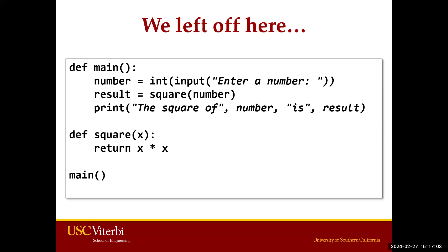The user enters a number and we convert it to an integer with the int function. Then we call the square function and use this number as an argument. We hold the variable result that is coming from the square function — remember that square returns x times x. So if you want to use this information, you create a new variable and hold that information. Result will hold x times x, and at the end, we print 'the square of number is result.' Number and result here are variables, covered in more detail last week, so I encourage you to check last week's videos again.